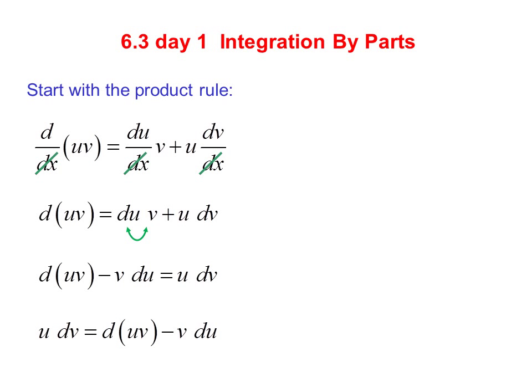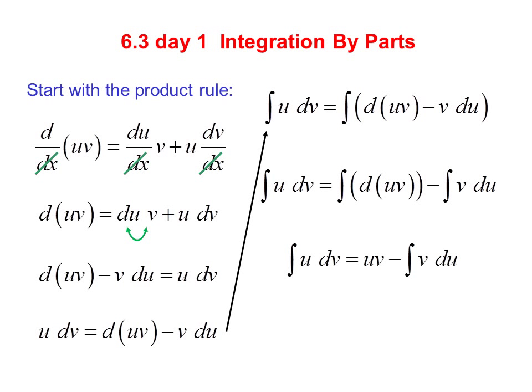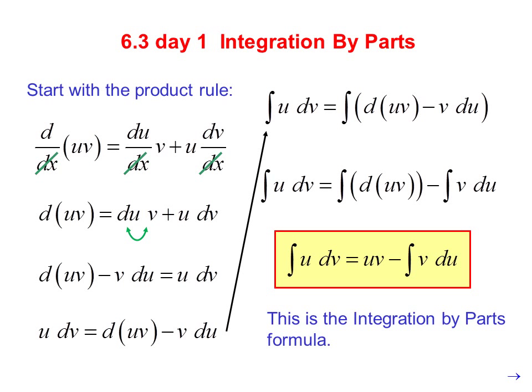Switching sides, we have u·dv equals d(uv) minus v·du. Integrating both sides and splitting the right side, and recognizing that the integral and derivative are inverse operations, we get the integration by parts formula: the integral of u·dv equals u·v minus the integral of v·du.